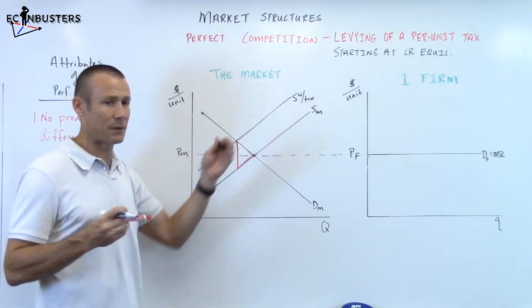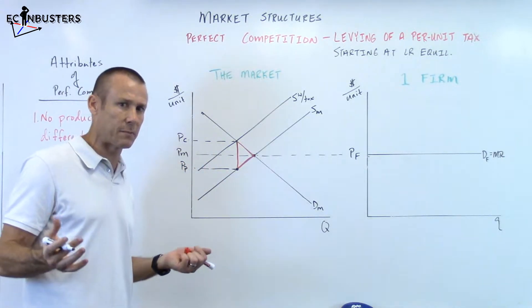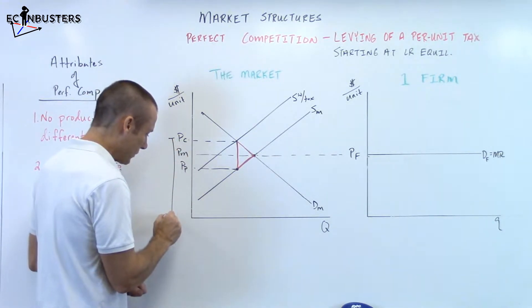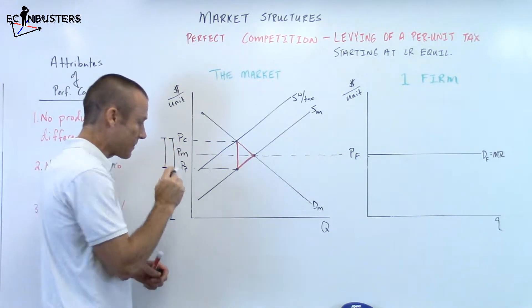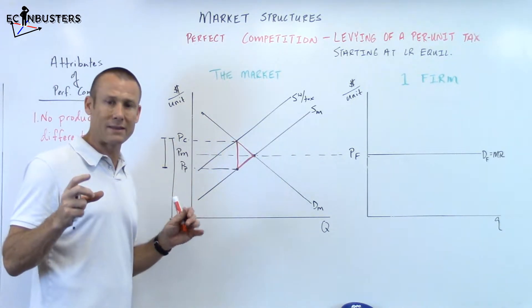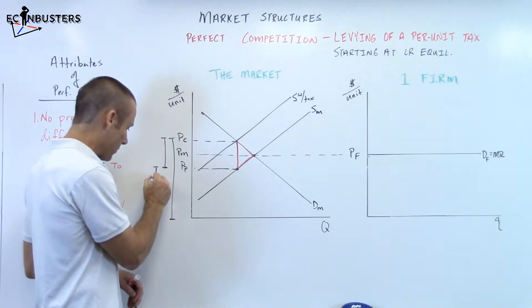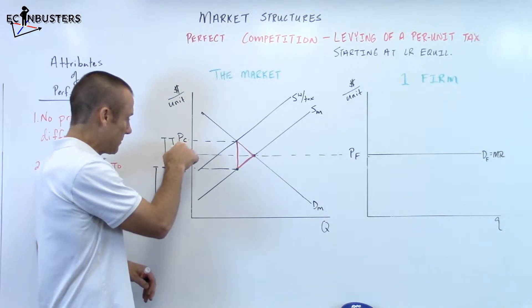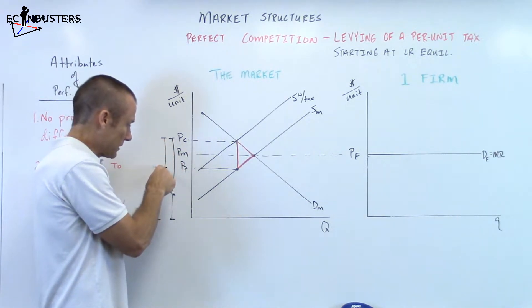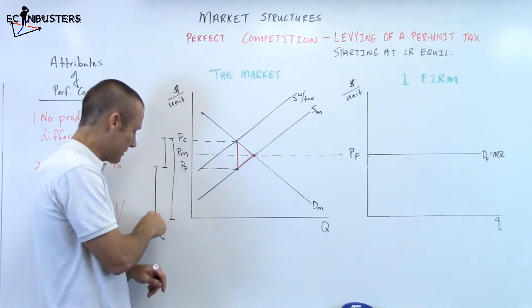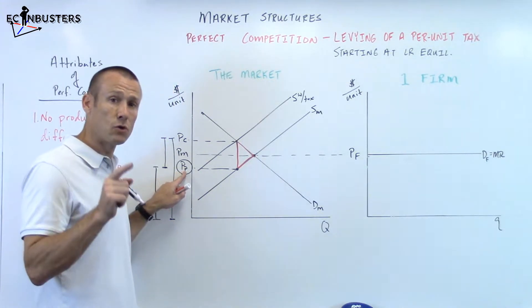I've got my tax wedge, I've got my supply. I'm going to bring this over — that's going to be price consumer (Pc), and I'm going to bring this over — that's going to be price producer (Pp). The consumer is going to pay that vertical distance per unit to the producer, and then the producer is going to turn around and pay that per unit tax to the government, leaving the producer with an after-tax per unit revenue of Pp.